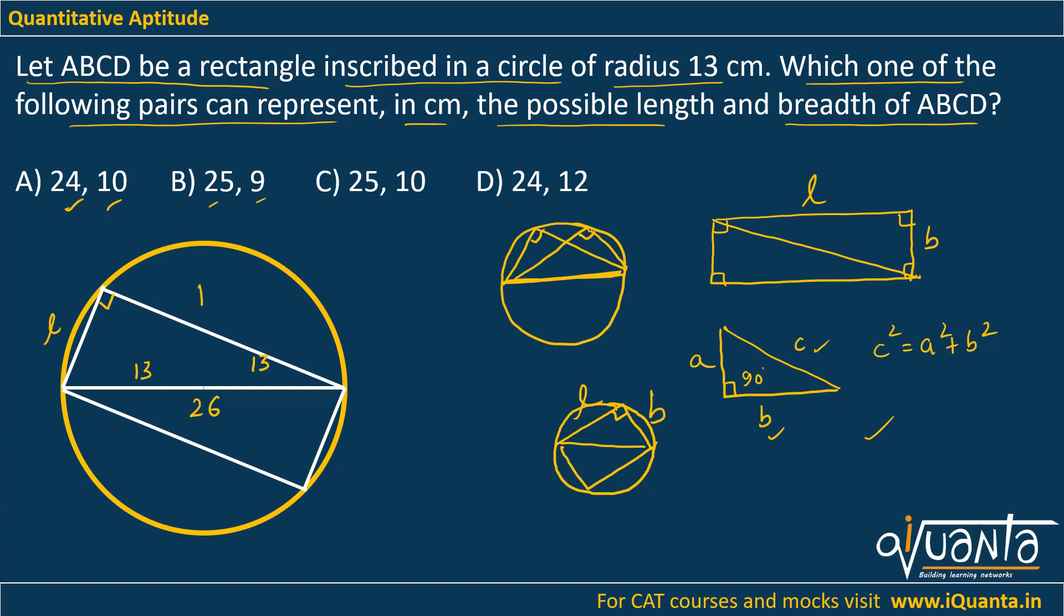That means length square plus breadth square should be equal to 26 square. So length square plus breadth square should be 26 square, which is 676. Now there is only one option that satisfies this equation, which is option A: 24 square plus 10 square gives us 676. Option A will be the correct answer. That is how you have to solve this question.